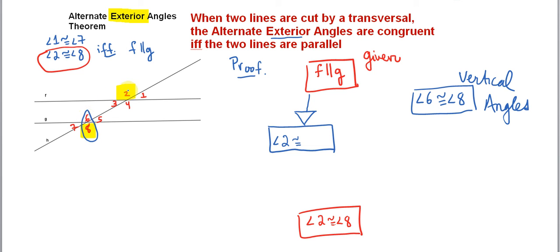Well, that's angle 6. Angle 2 and angle 6 are corresponding to each other, so we can say they are congruent. The reason is the same as in the previous problem: corresponding angles postulate.